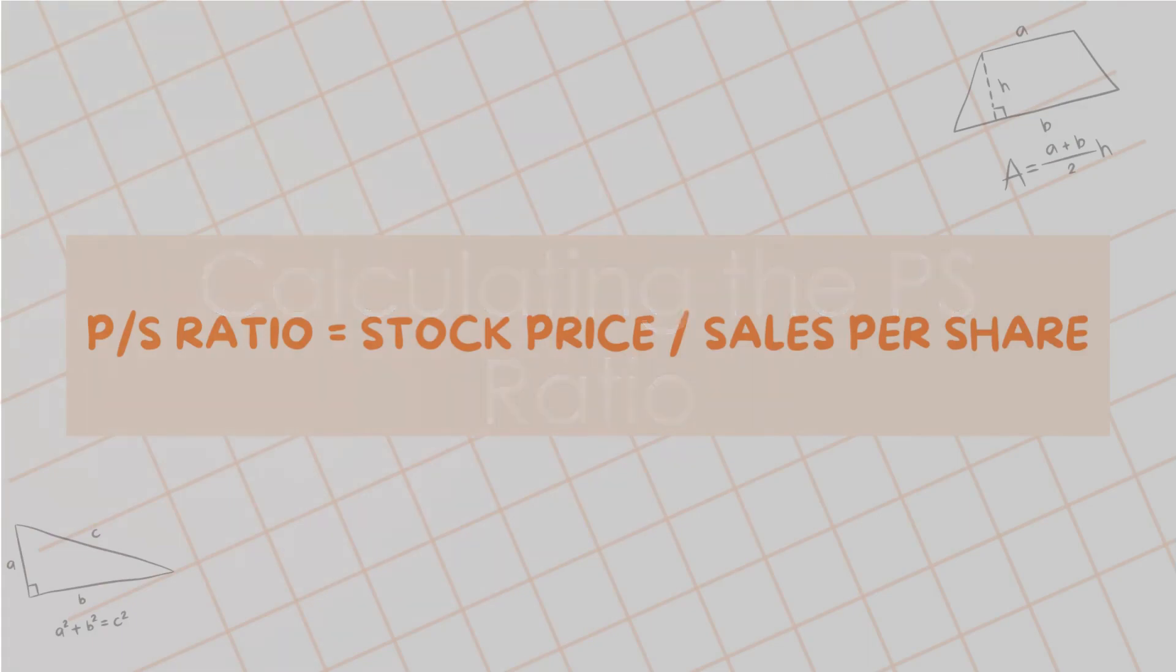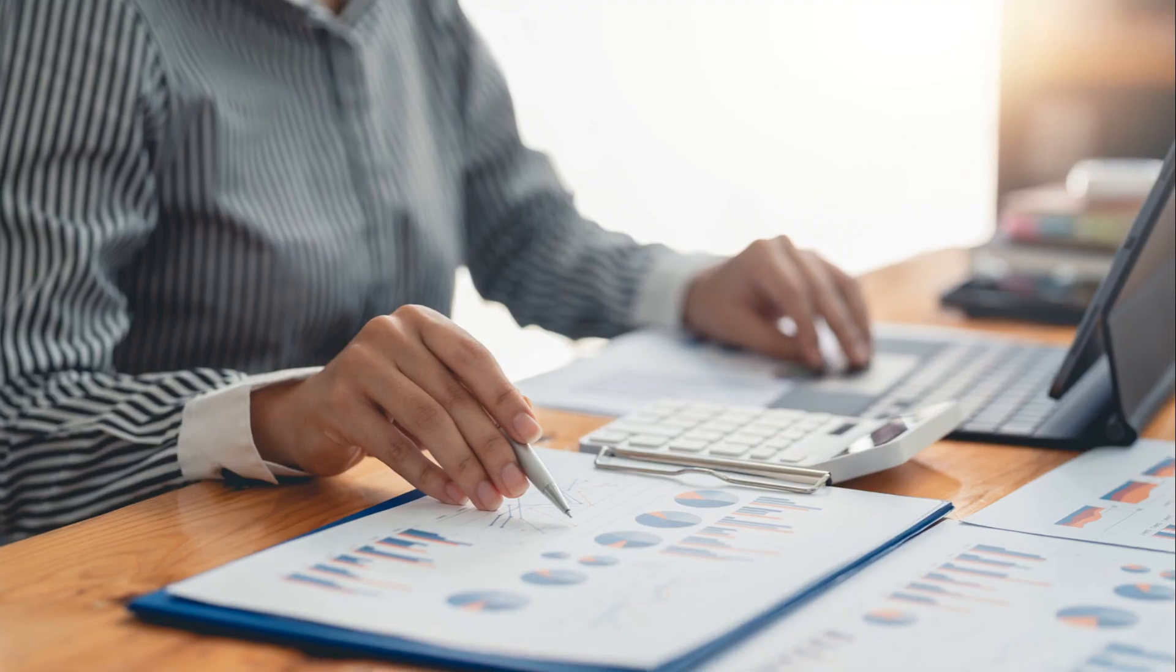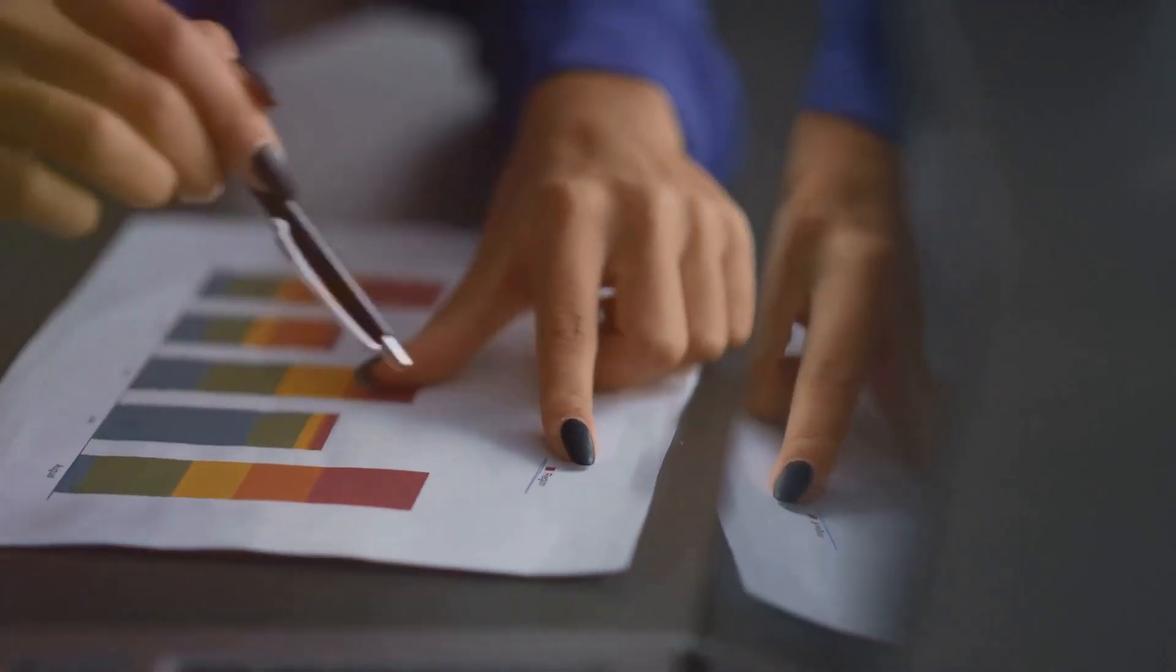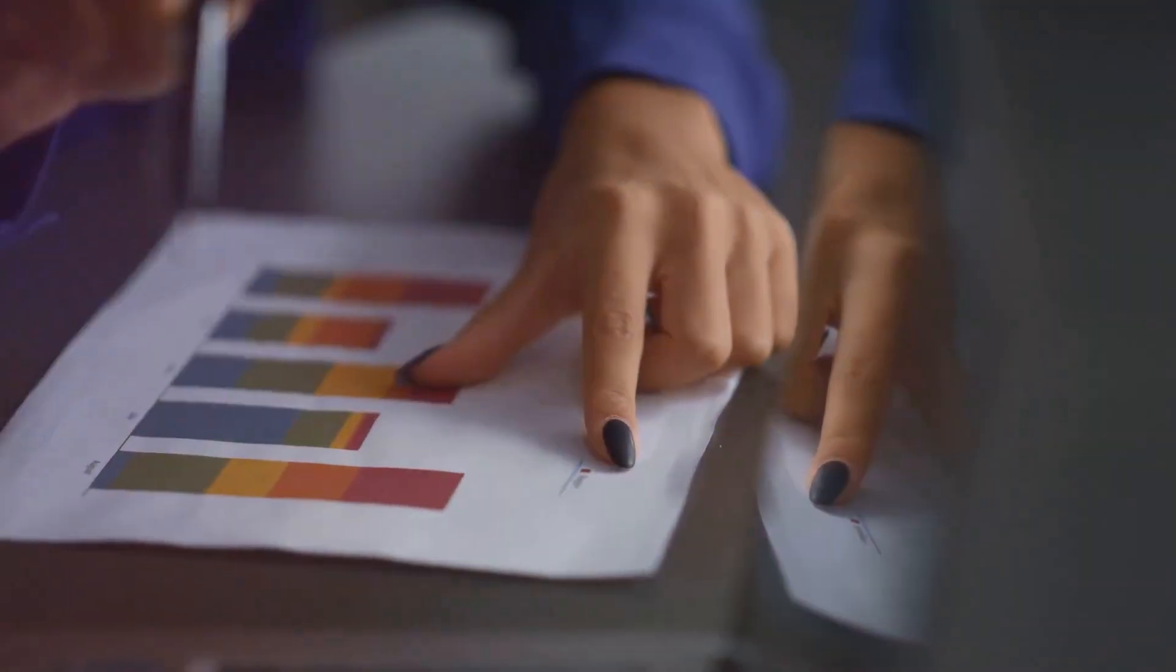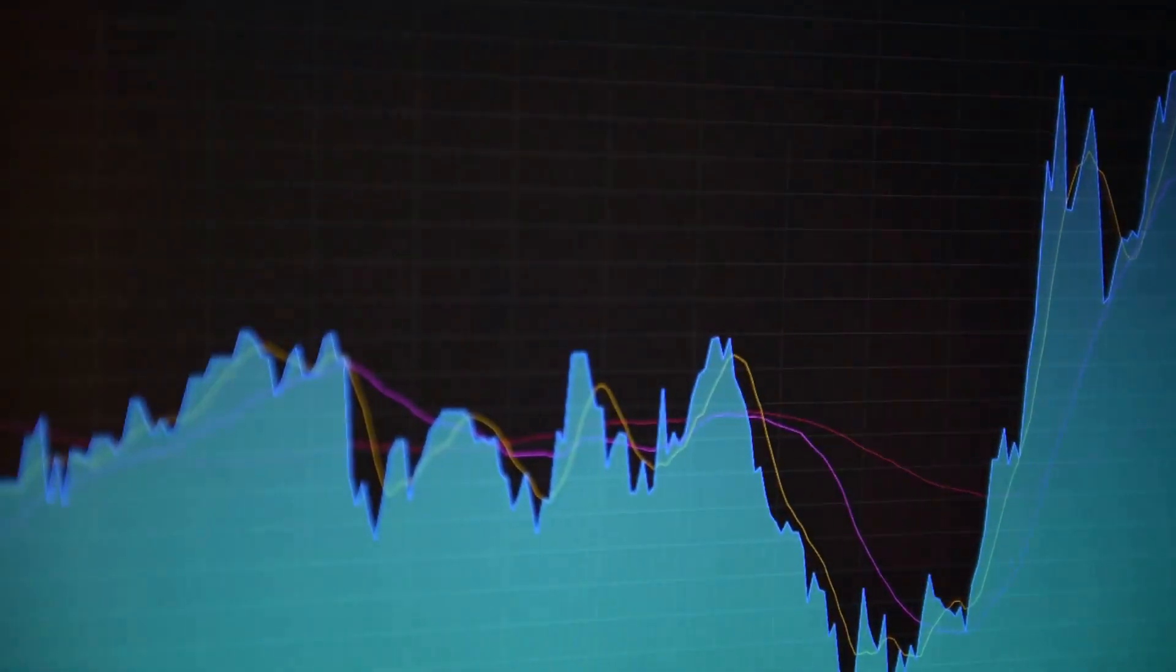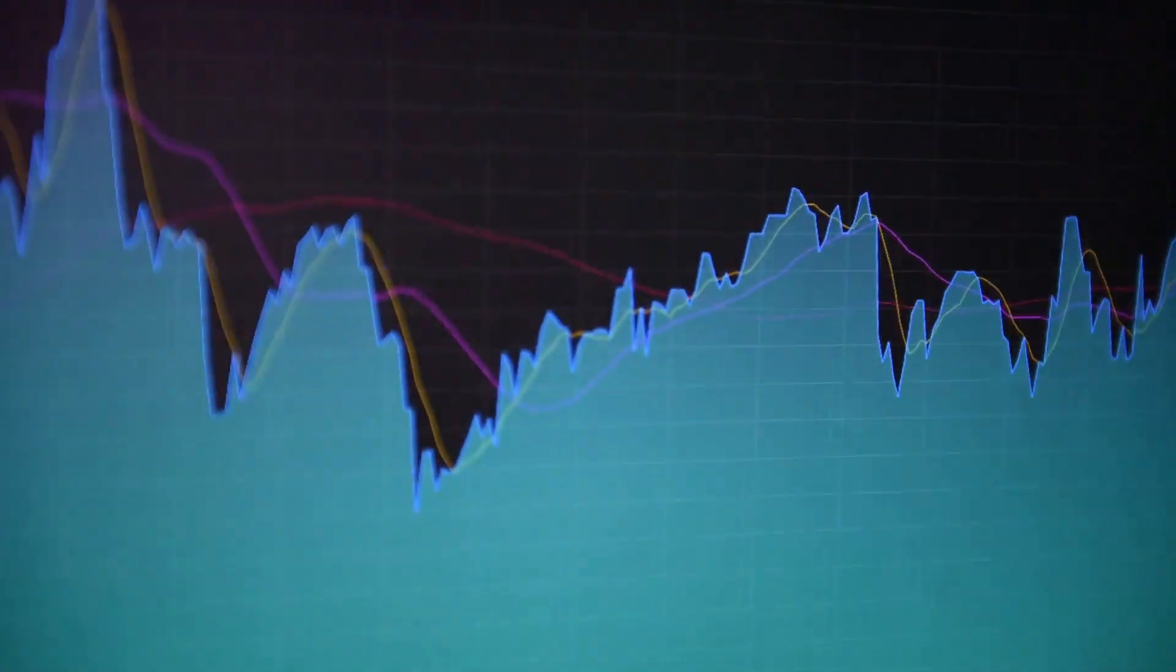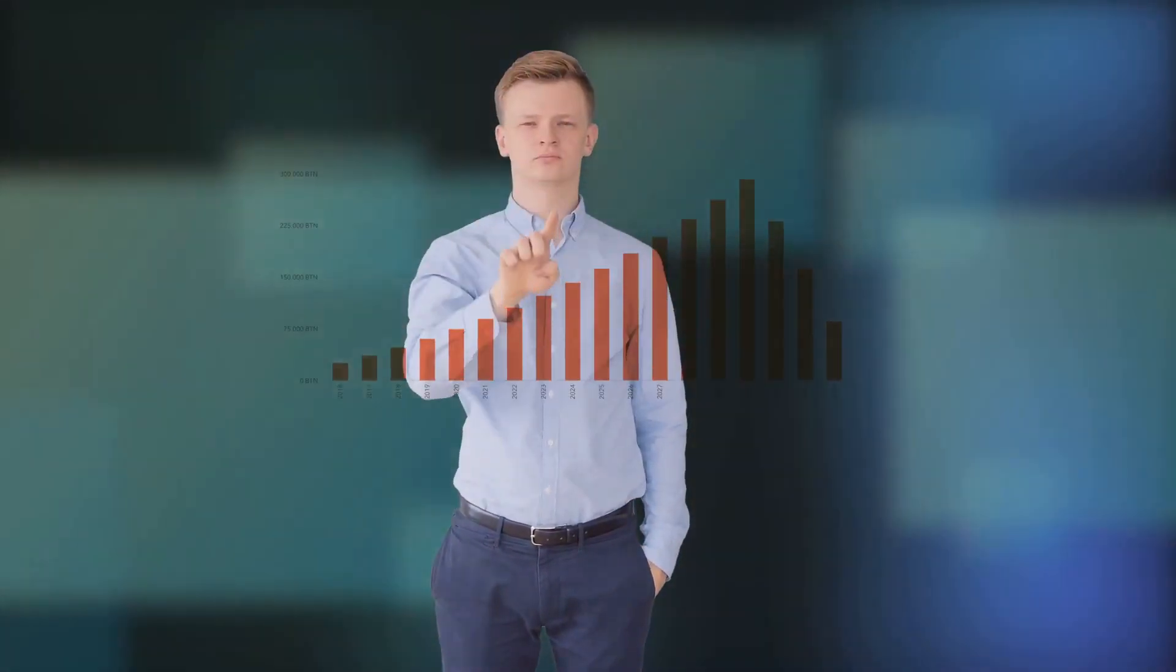Let's break down the formula. P/S ratio equals stock price divided by sales per share. The stock price is straightforward—it's the current price of one share of the company's stock. Sales per share represents the total revenue a company generates divided by the number of shares it has outstanding. To calculate sales per share: sales per share equals sales divided by shares outstanding.